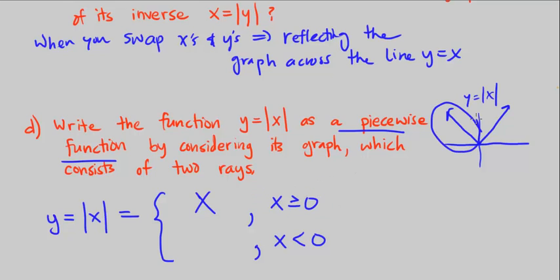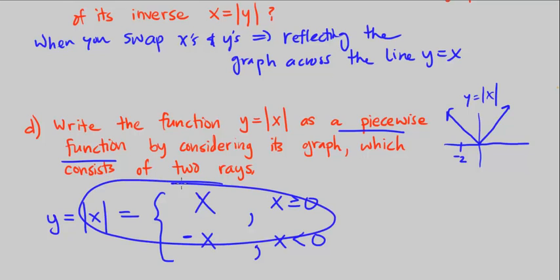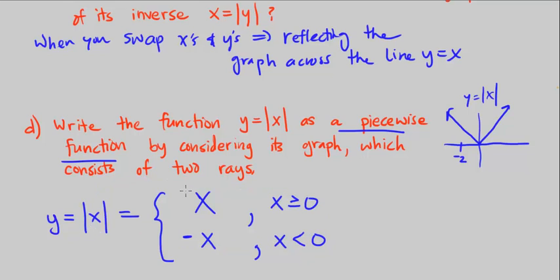On the other side, for x less than zero, if we plug in negative two, we go up positive two. Negating the negative gives a positive, so we call that negative x. This is the definition of the absolute value of x: it equals x when x is greater than or equal to zero, and negative x when x is less than zero — defining it as a piecewise function.